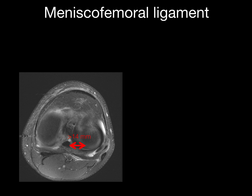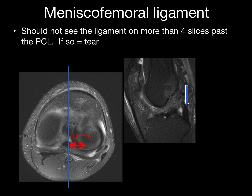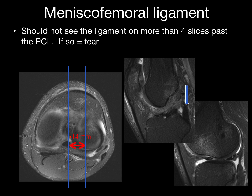Here's an example: the arrow points left to the posterior cruciate ligament and right to where you should no longer see vertical signal; the small arrows point to the ligament. If the signal persists beyond 14 millimeters from the posterior cruciate ligament, it is a true tear. In this example, the posterior cruciate ligament is shown and then the next slice — 14 millimeters away laterally — still shows increased signal, so that is actually a tear.